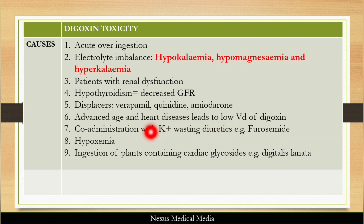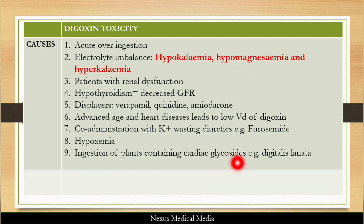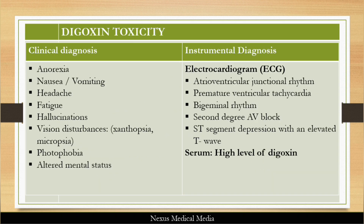Co-administration with potassium-wasting diuretics like furosemide can also cause toxicity — if you reduce potassium, you make the patient susceptible to digoxin toxicity. It can also occur in hypoxemia, and very rarely, ingestion of plants containing cardiac glycosides, for example Digitalis lanata.